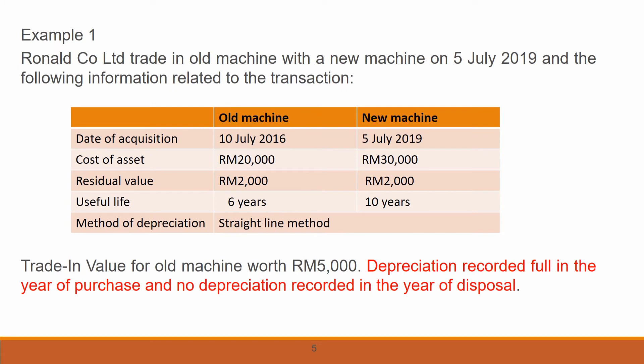Now look at the example. Ronald Company Limited traded in an old machine for a new machine on 5th July 2019, and the following information is related to the transaction.